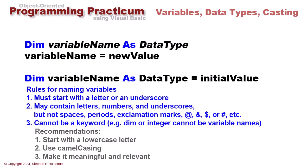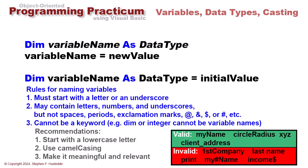Here are some examples. Valid ones would be myName, circleRadius, xyz—may not be the most meaningful but I use xyz quite a bit for loops or simple temporary data. We can have underscores or numbers in our name, so client_address is valid. But we can't start with a number, so 1stCompany is invalid. Can't start with digits; it's got to be a character.